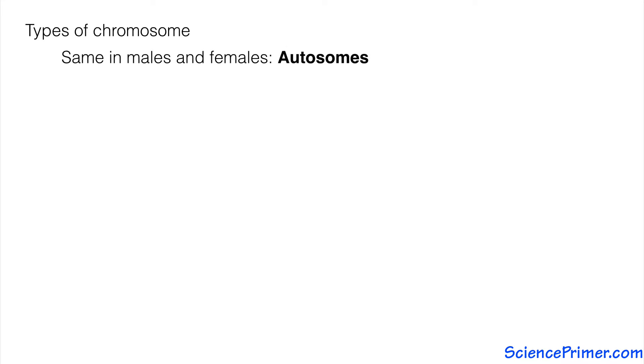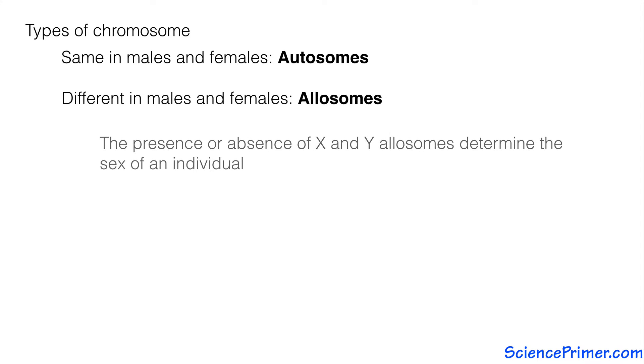Chromosomes that both males and females possess in matched sets are called autosomes. The X and Y chromosomes that determine the sex of an individual are called allosomes.